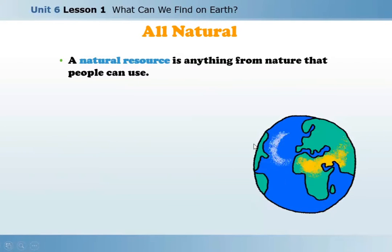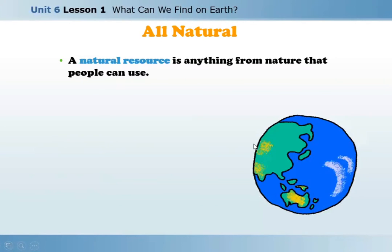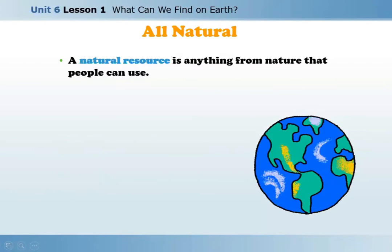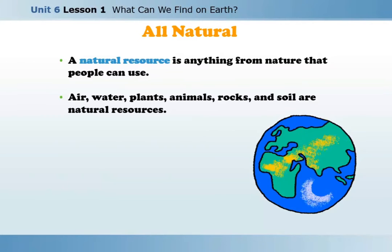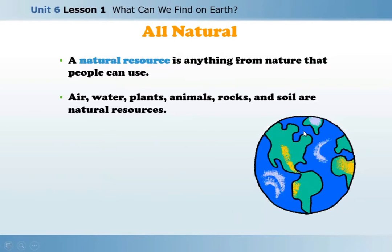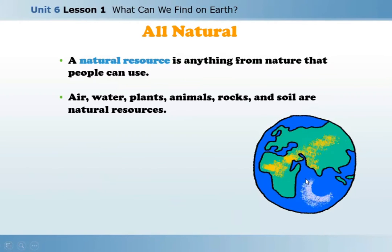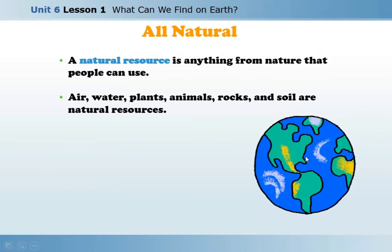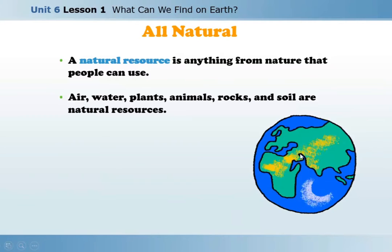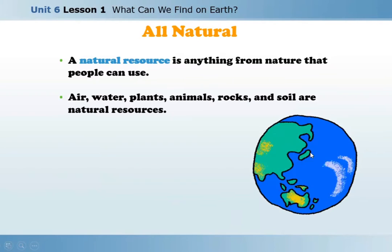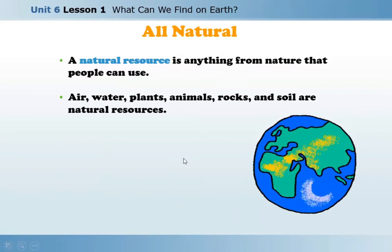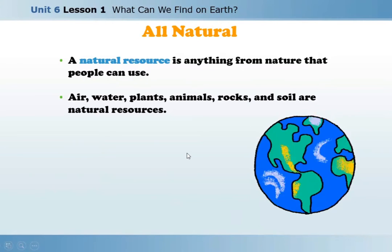A natural resource is anything from nature that people can use. Air, water, plants, animals, rocks and soil are natural resources. All of these natural resources are on the earth and inside the earth that we live in.